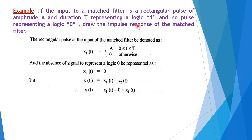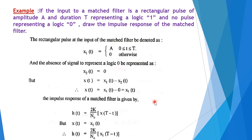Since x(T) = x₁(T) − x₂(T) and x₂(T) = 0, we have x(T) = x₁(T). The impulse response of a match filter is H(T) = 2k/N0 times X(T − T). Since x(T) = x₁(T), we rewrite the equation as H(T) = 2k/N0 times x₁(T − T).